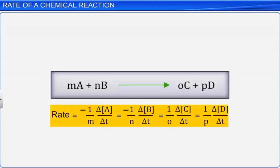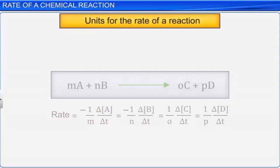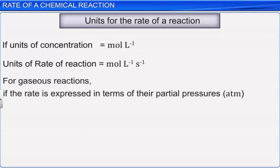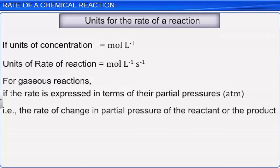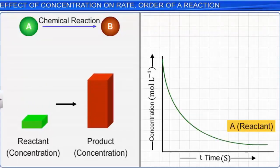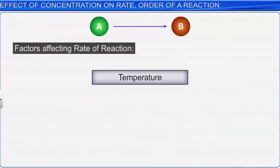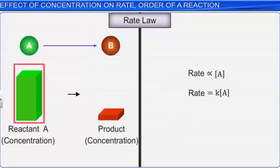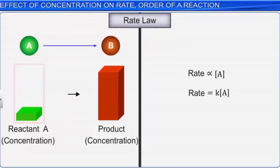You have learnt about the rate of reaction. Let us now look at the units for the rate of a reaction. If the concentration is in mole per liter, then the unit for the rate of reaction is mole per liter per second. For gaseous reactions, if the rate is expressed in terms of their partial pressures, then the unit for the rate of reaction is atmosphere per second. One of the factors that determine the rate of a reaction is the concentration of the reactants.